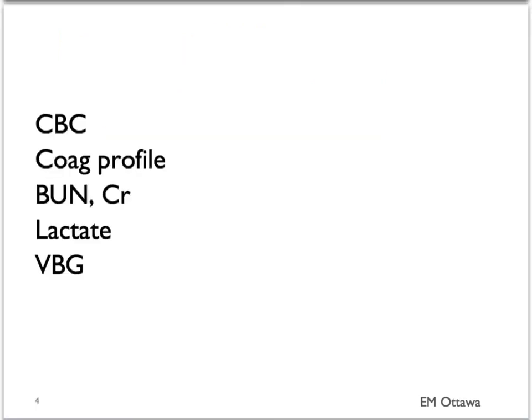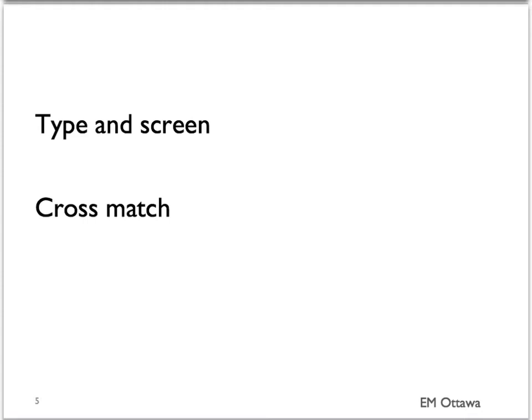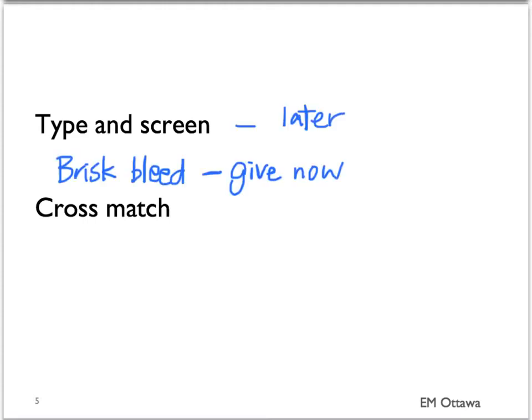To summarize, in patients who are having active GI bleed, a CBC, coagulation profile, and BUN/creatinine are fairly standard. In patients where we're worried about a sick pathology such as ischemic colitis, a lactate and a VBG would be helpful. In patients with GI bleed we often do a type and screen in case we have to give them blood later. In patients with brisk GI bleed, if we want to give them blood now, you'll want to cross-match them for a few units of packed red blood cells. We'll discuss that further in the treatment videos.